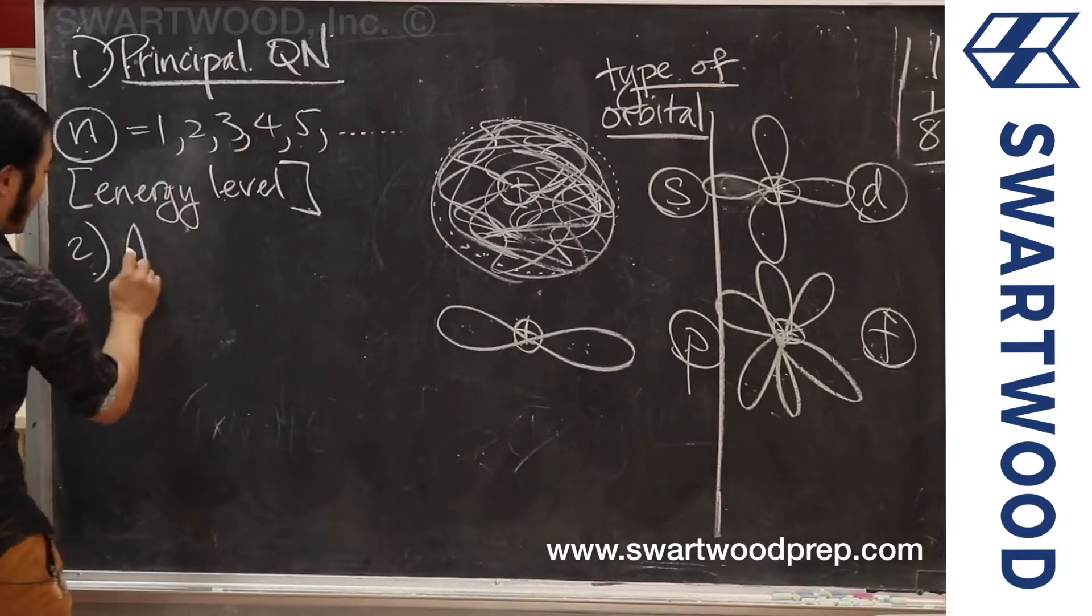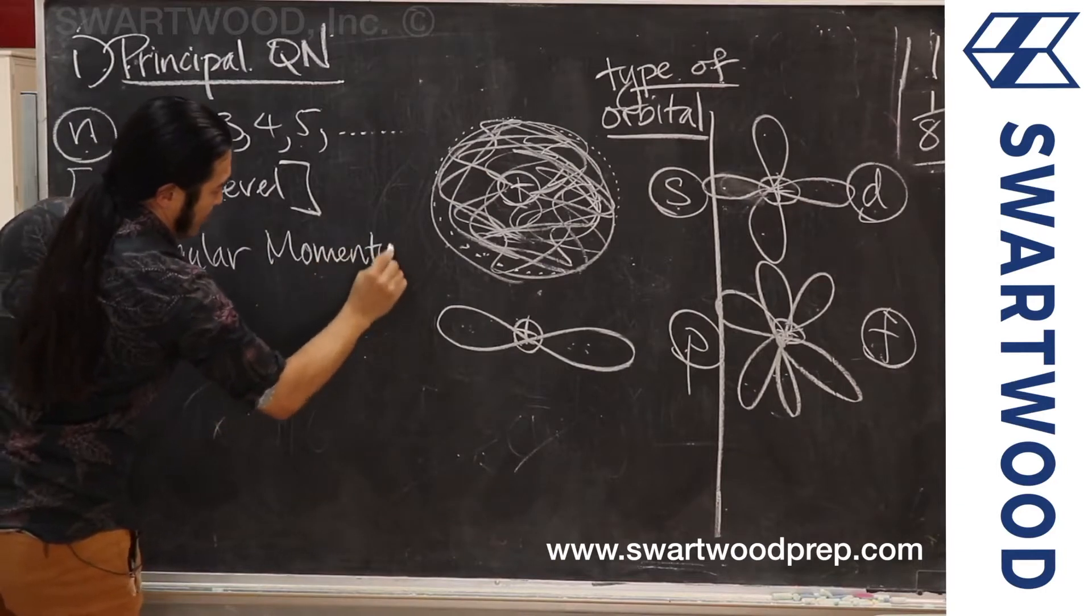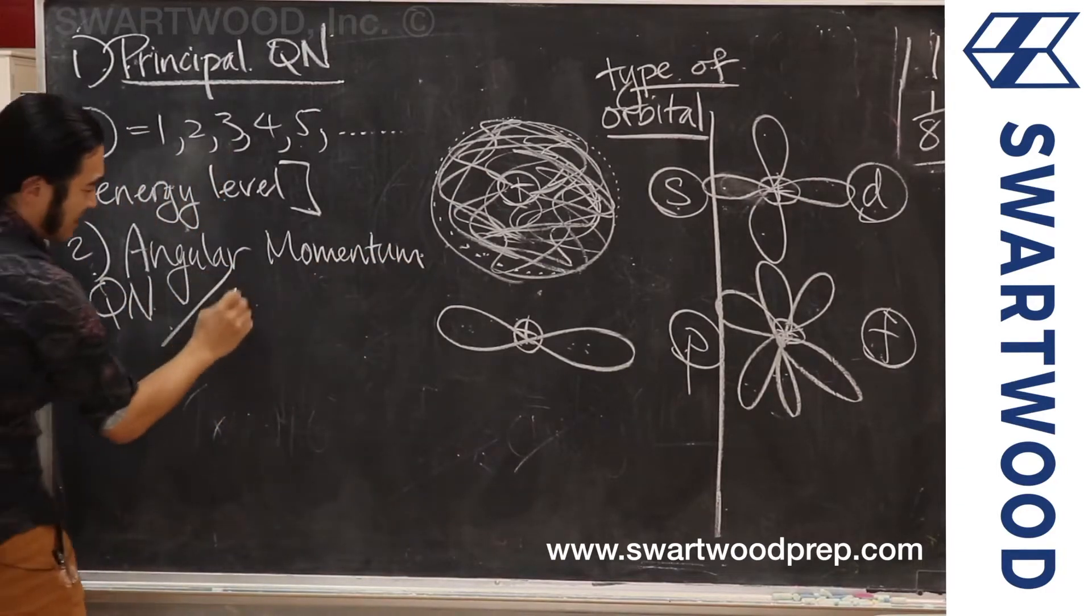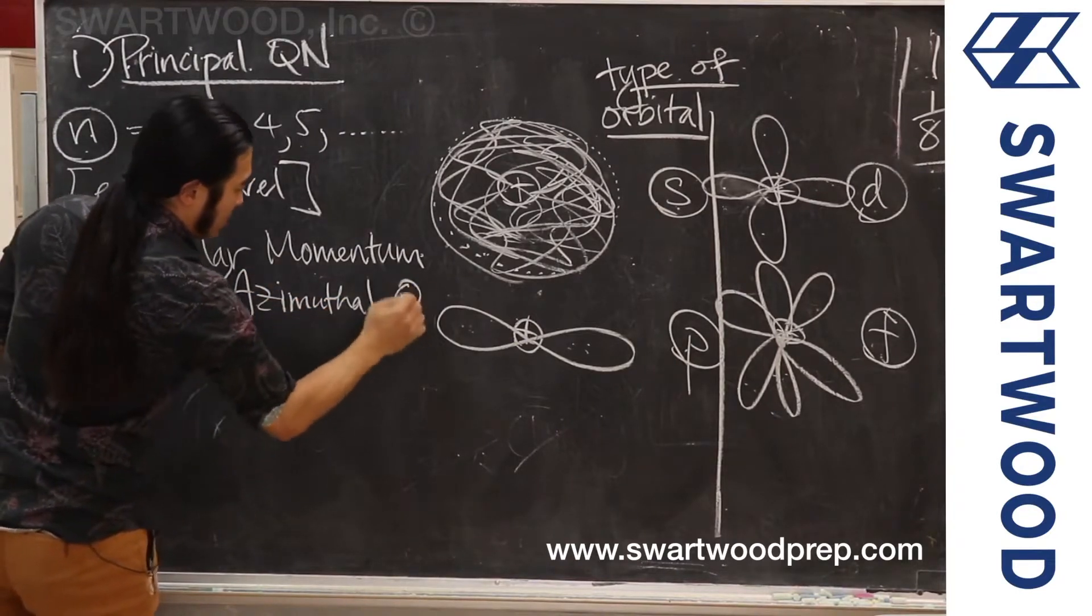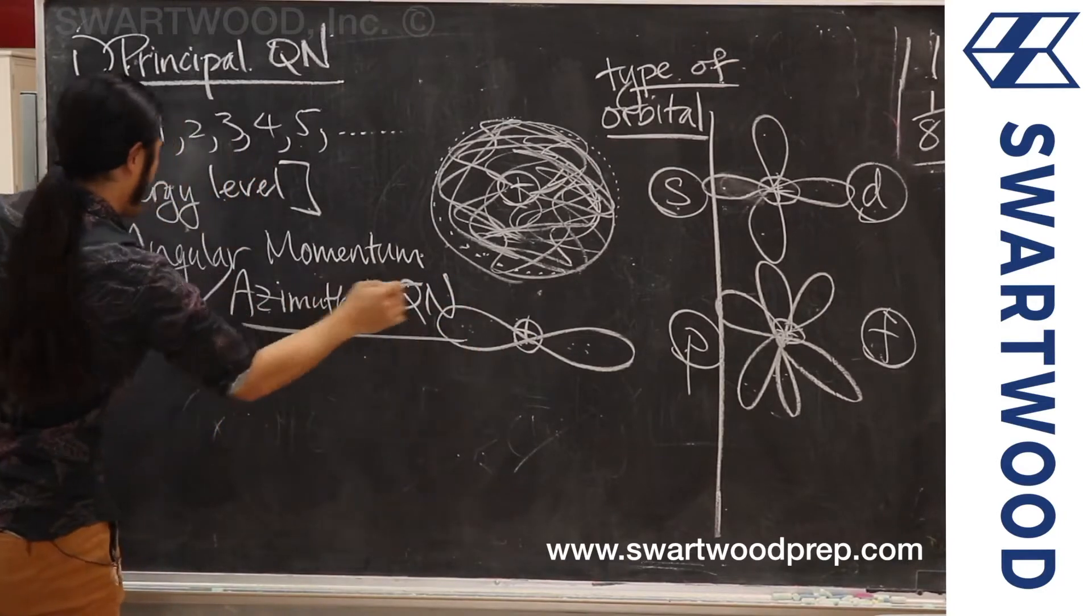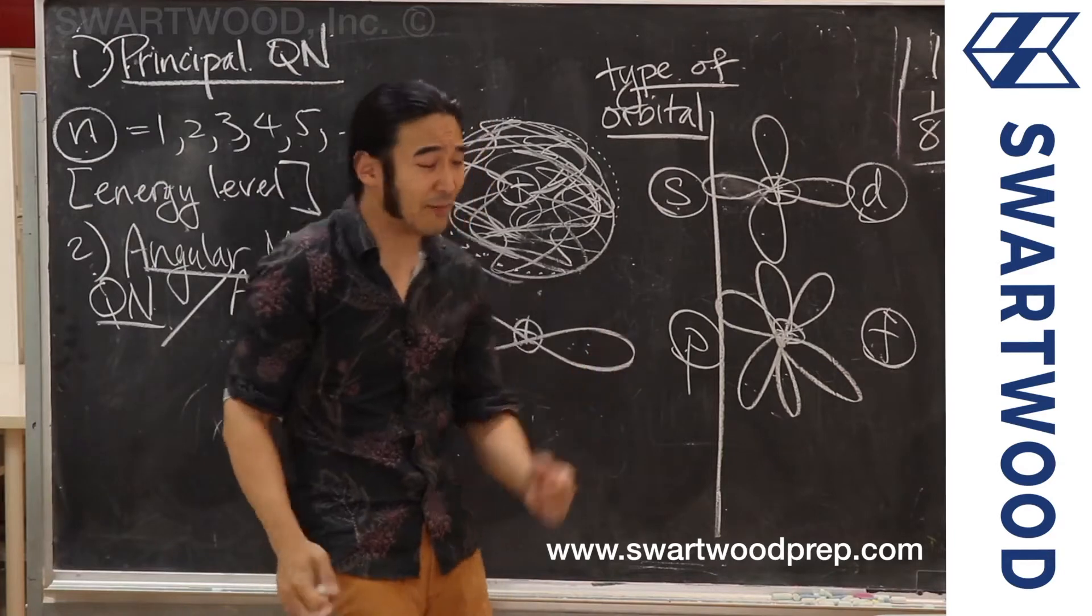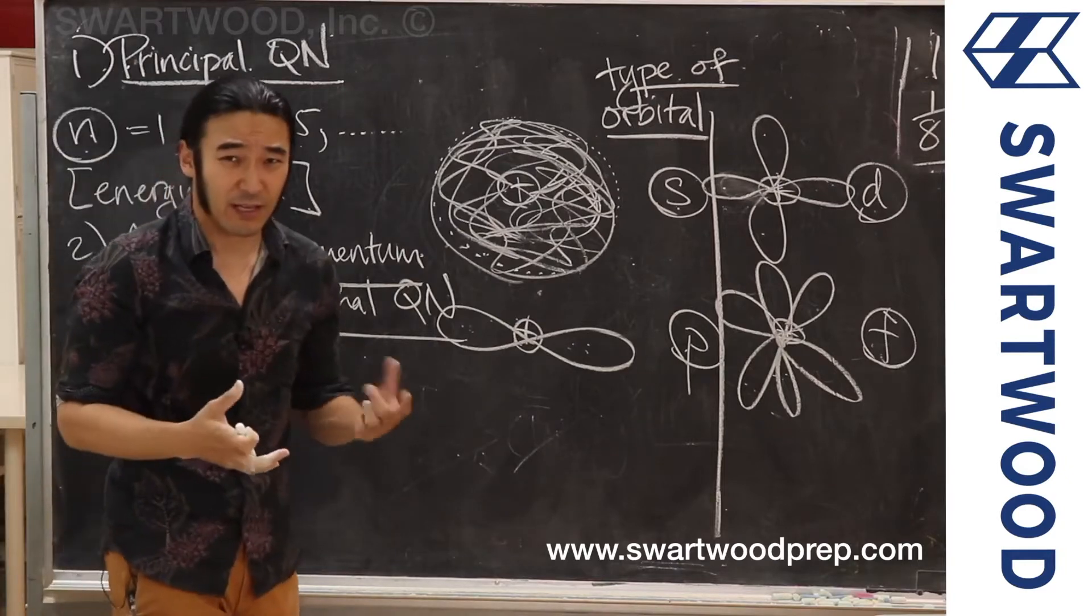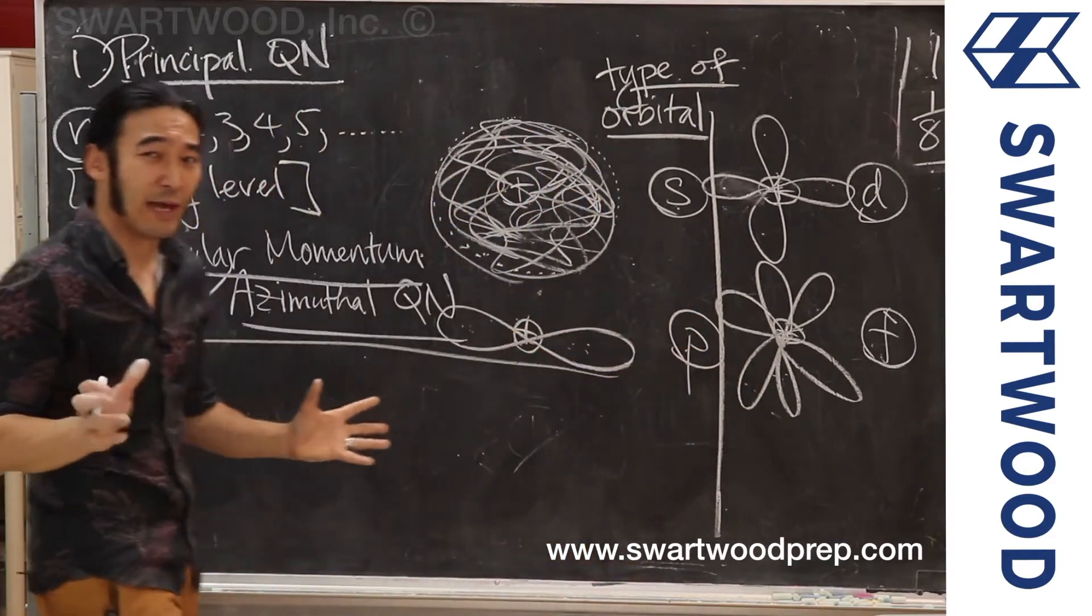Now, it is true when you look in your textbooks and all that, there are other shapes that go along with these guys. Some of them look more like dumbbells with little hoops on them. I wouldn't worry about that for our exam. It's enough to know that the principal quantum number gives you roughly total energy and distance from the nucleus. The next guy gives you a description of the type of orbital you're dealing with.